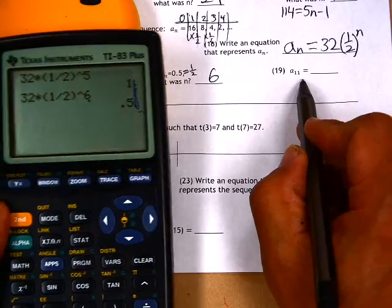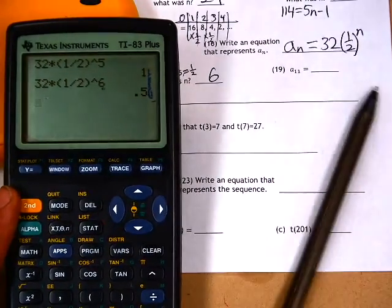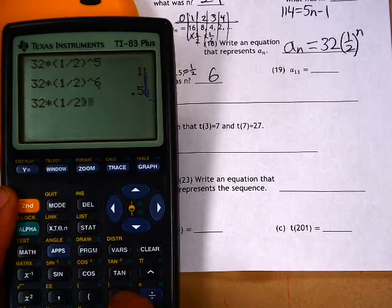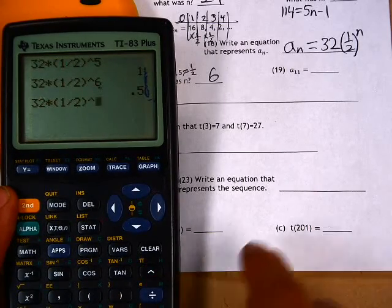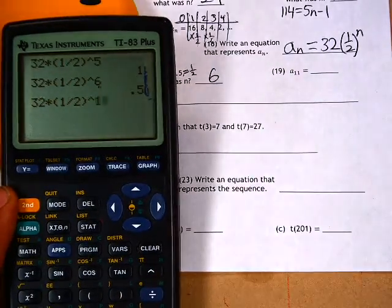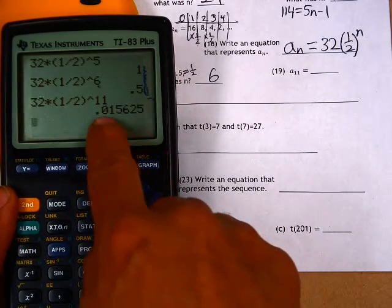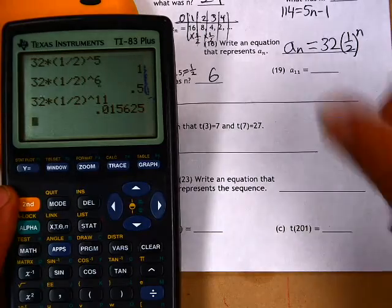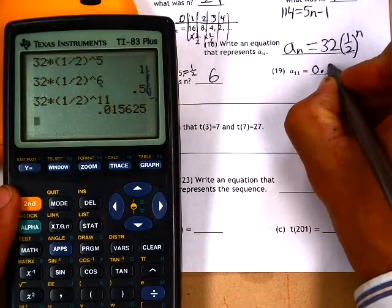A of 11, the best thing is to plug it in here. So 32 times one half to the power of 11, like so. And I get the answer 0.015625. I'll go ahead and write down all those decimals.